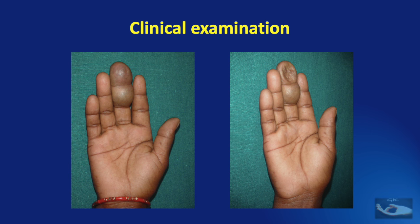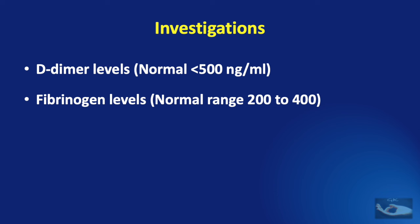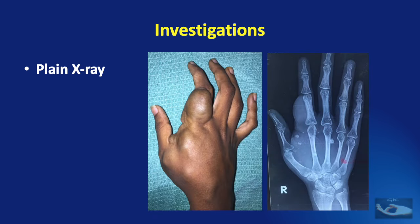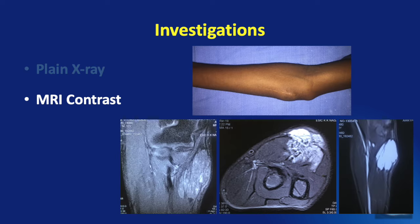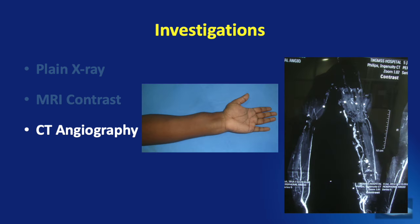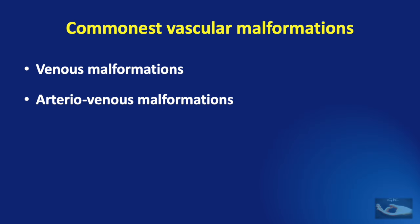Vascular malformations have typical compressibility, more obvious when the venous component is high, because the collapsed malformation takes some time to fill up. Elevated D-dimer and fibrinogen levels are seen typically in venous malformations. Plain x-ray in a venous malformation may show phlebolith formation — small stones that occur within the venous mass. MRI with contrast will show the mass formed by the venous malformation. CT angiography will show dilated vessels in some malformations, typically AV malformations.